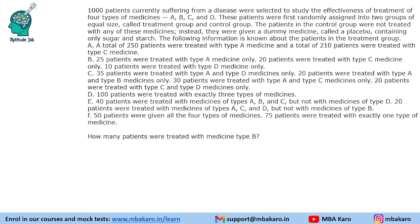There are 1000 patients currently suffering from a disease. They were selected to study the effectiveness of a treatment of 4 types of medicines A, B, C and D. These patients were first randomly assigned into 2 groups of equal size called the treatment group and the control group.